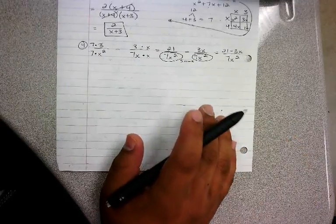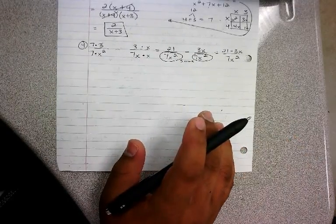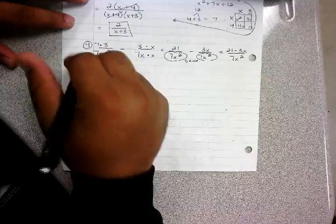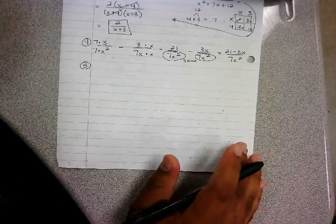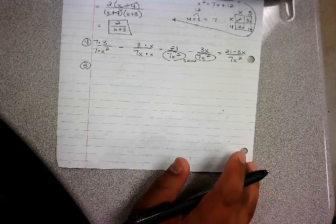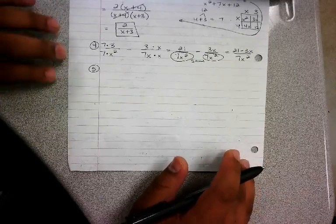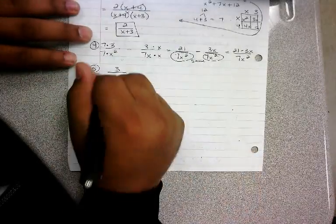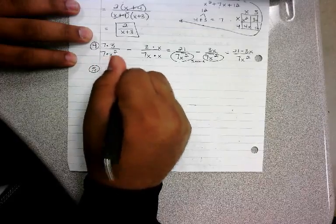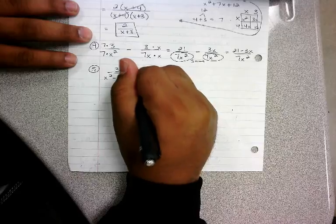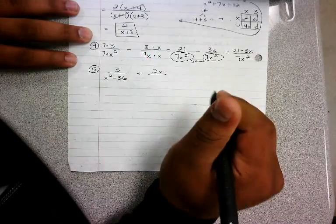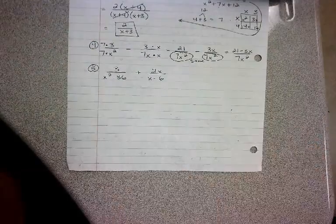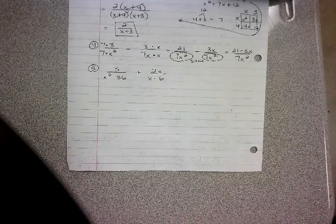Our last example, number five. Okay, we have 3 over x squared minus 36 plus 2x over x minus 6, and we're trying to simplify the expressions.